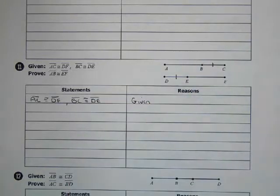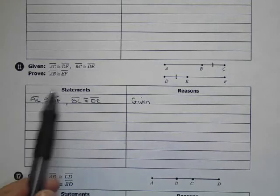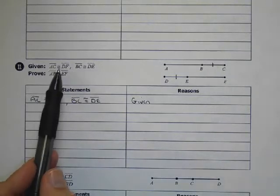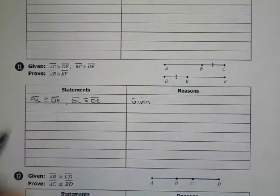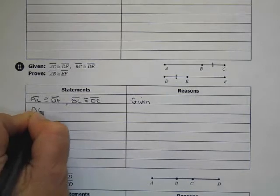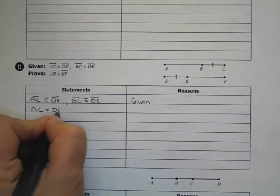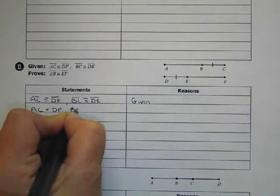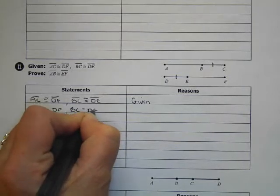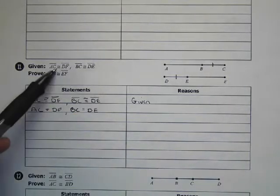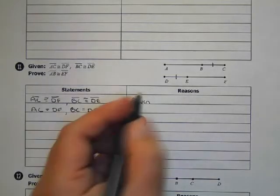So because these are congruent, we also know that their lengths are equal. So AC is equal to DF, BC equals DE. So you think about a proof is, because I know they're congruent, what else can I do? So this is definition of congruence.